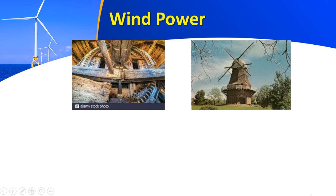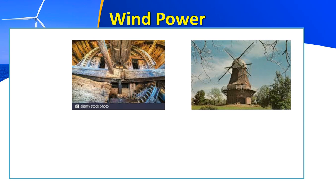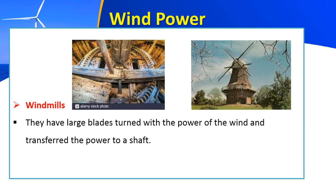The last power is wind power. Regarding wind power, we get it through windmills. We have two types of windmills. An old version — as you can see, they have large blades that move with the power of the wind. And when the blades are moved, they transfer the power to a shaft. The shaft is the thing that starts to generate the electricity.